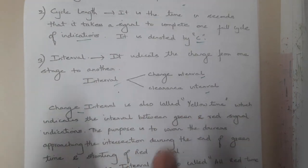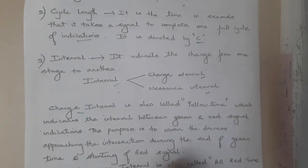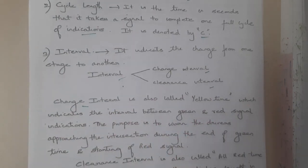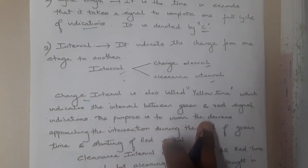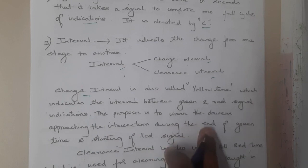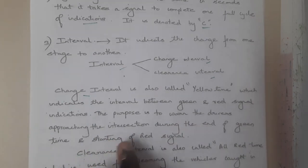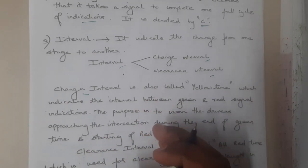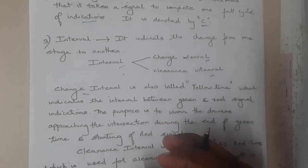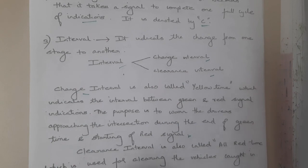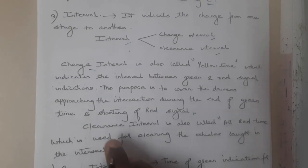Change interval is also called yellow time, which indicates the interval between the green and the red light. Its purpose is to warn drivers approaching the intersection at the end of the green light and the start of the red light — basically signaling that the green light is going to end, please stop, and the red light is going to start.